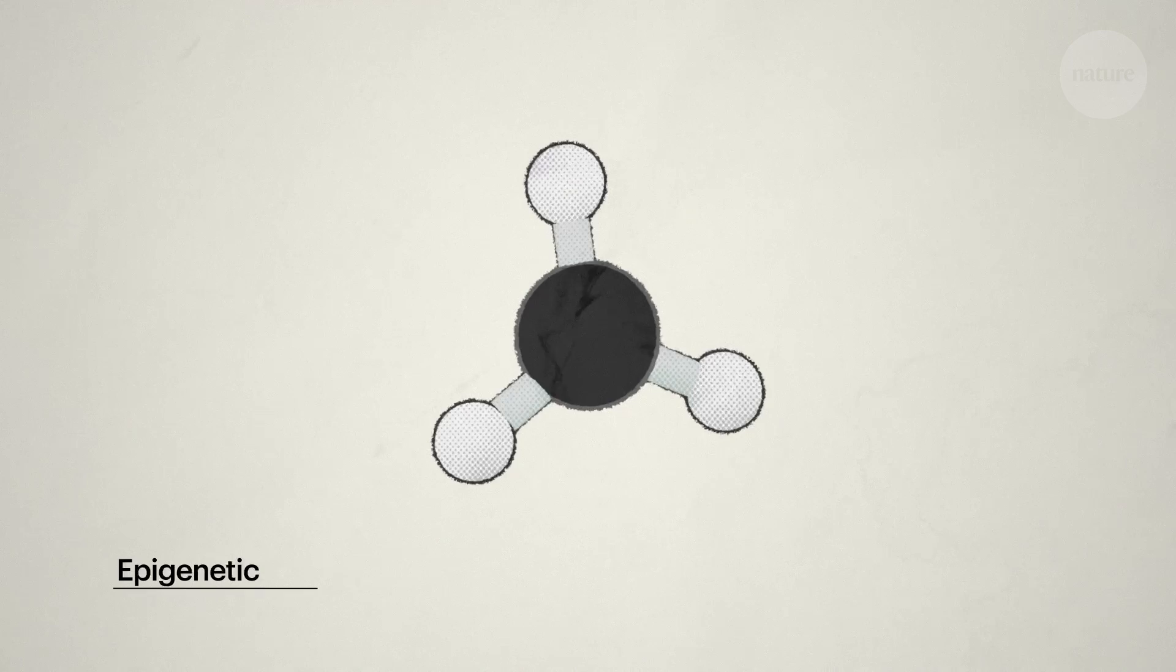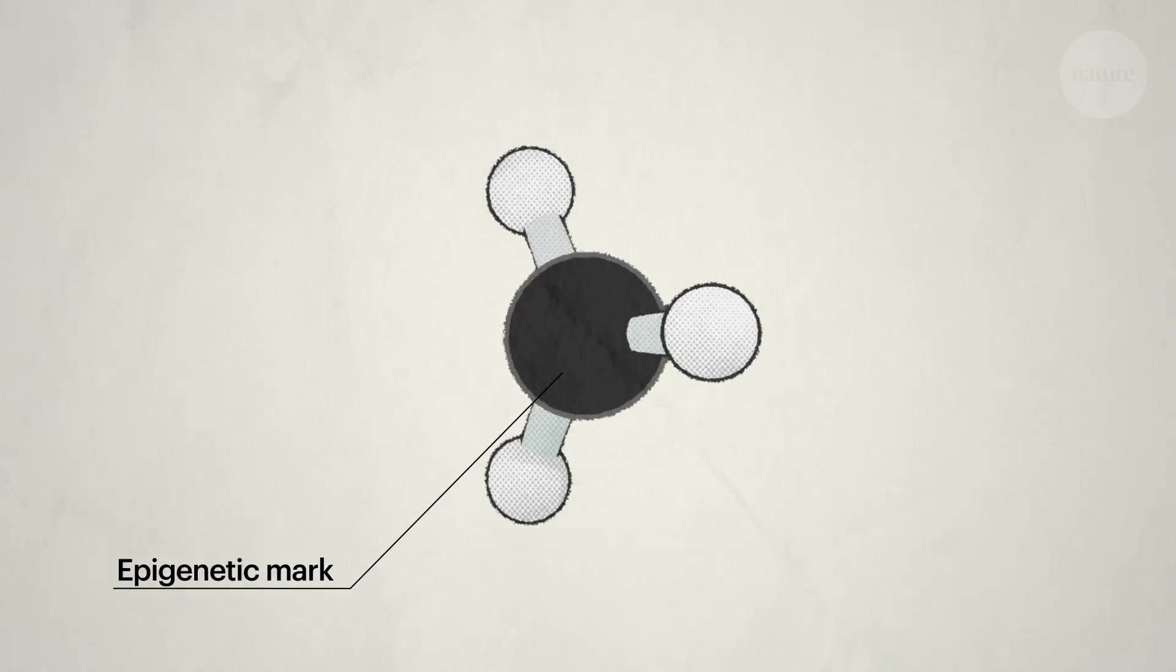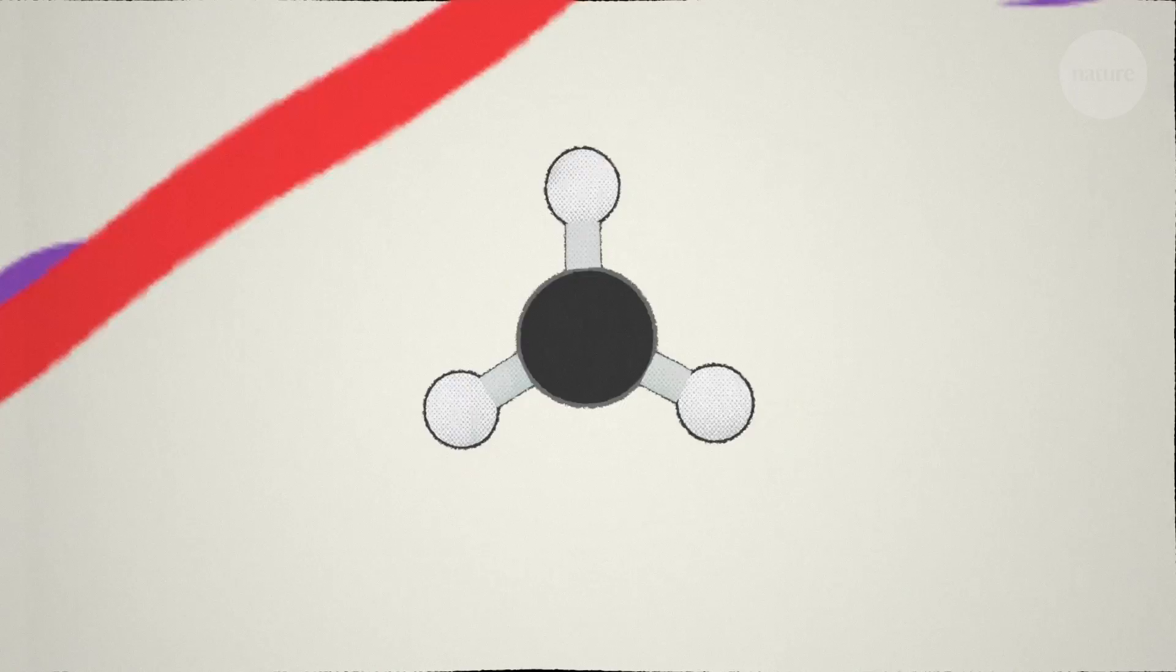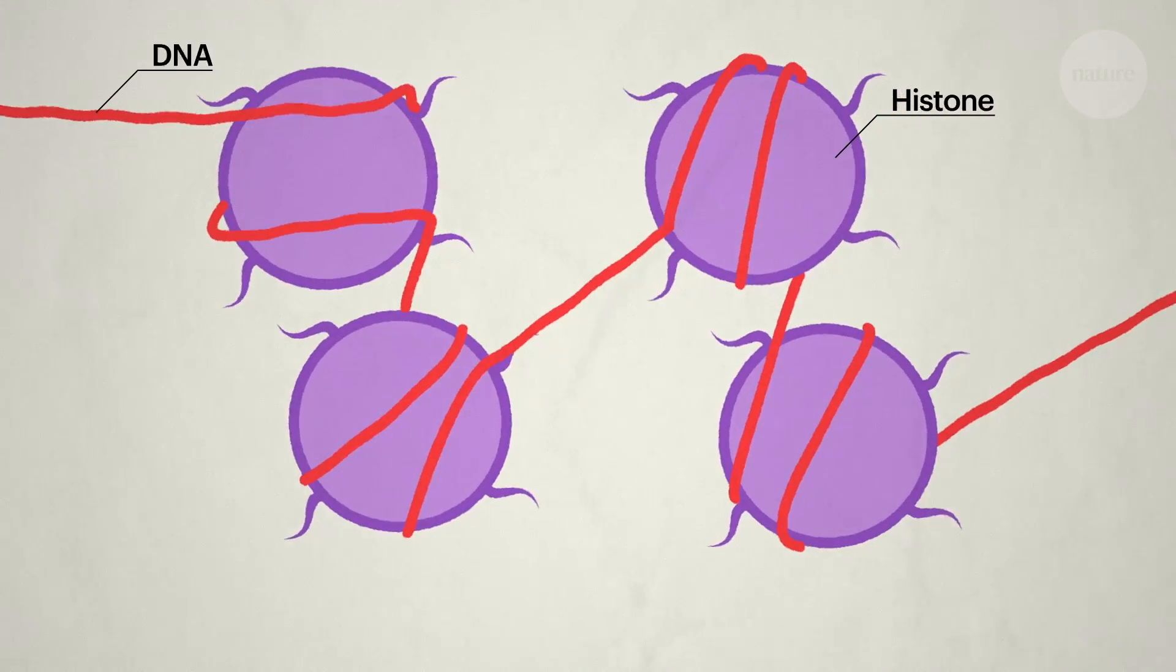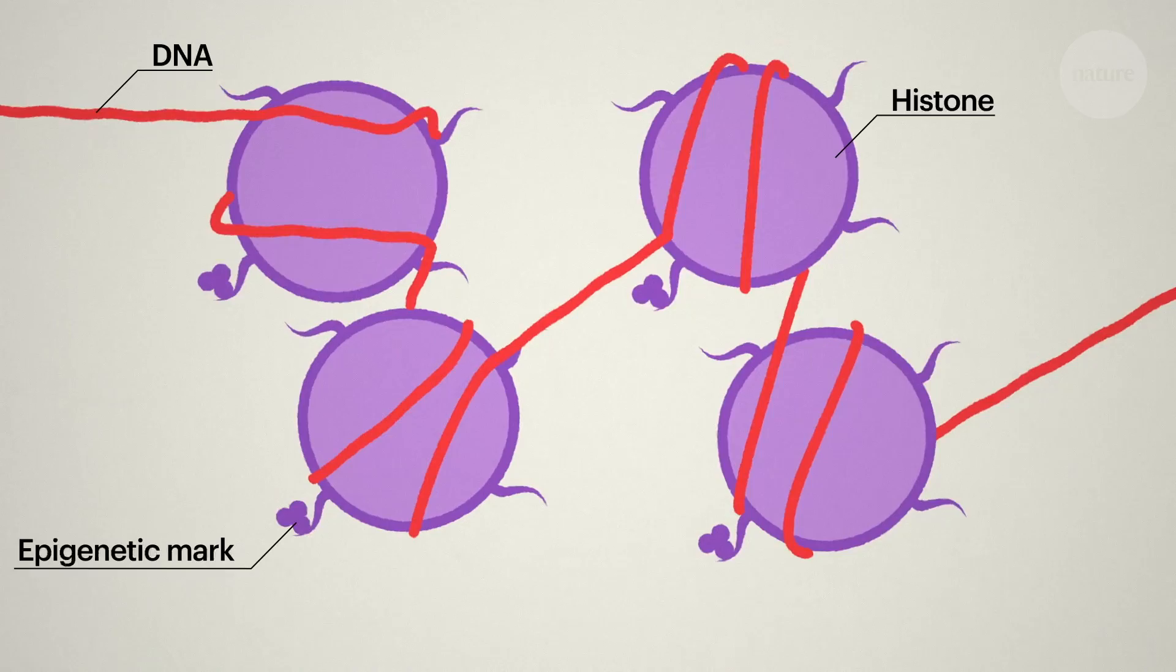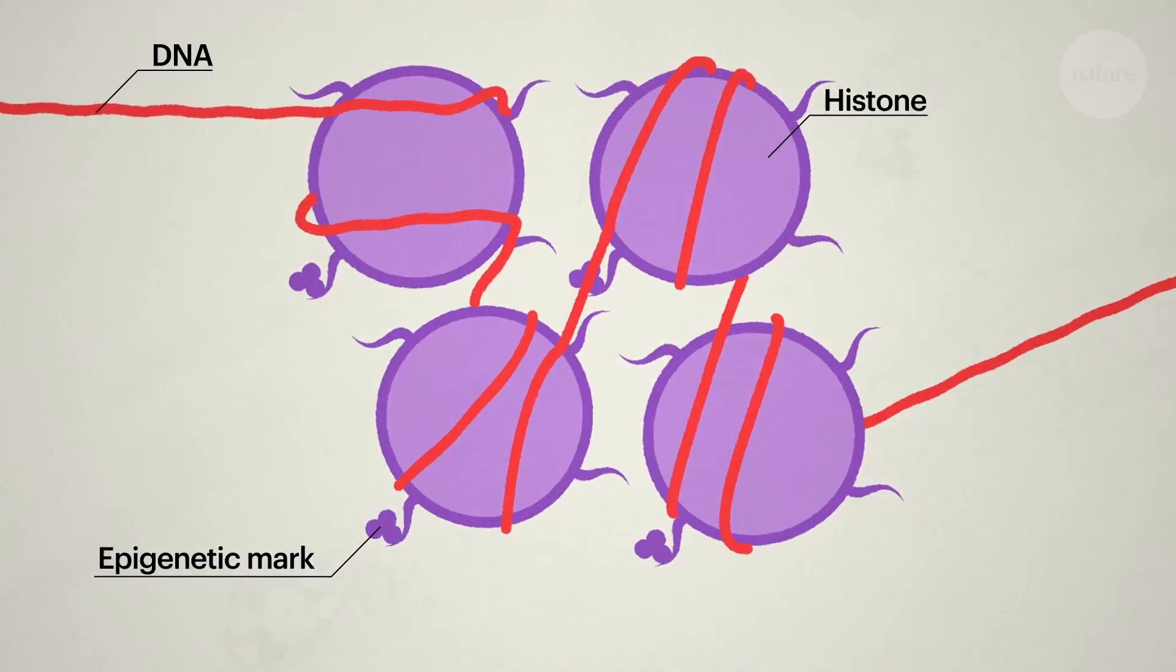These were epigenetic marks—chemical changes which can repress the expression of genes. They work by modifying histones, the molecules which support DNA. When they attach, the histones pack together, preventing the DNA from being expressed.